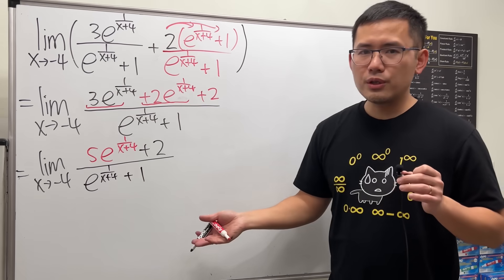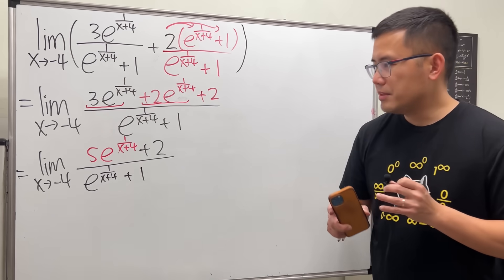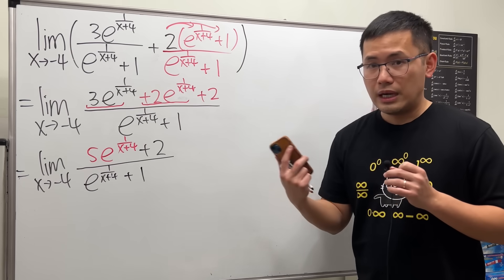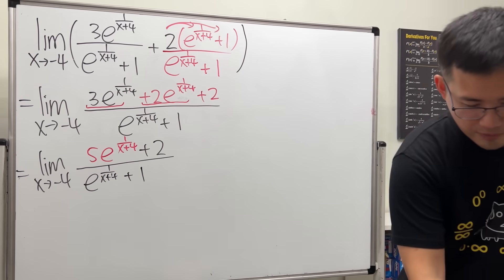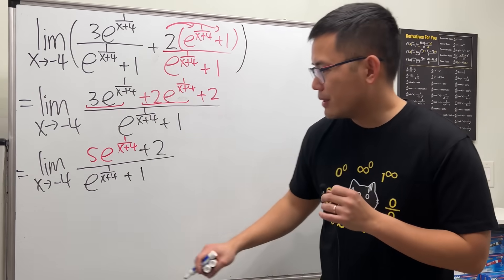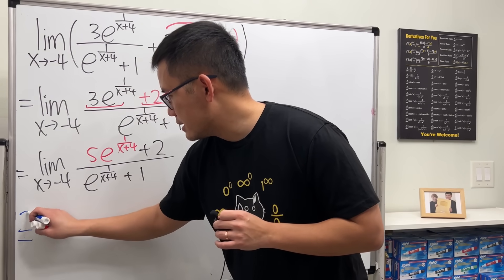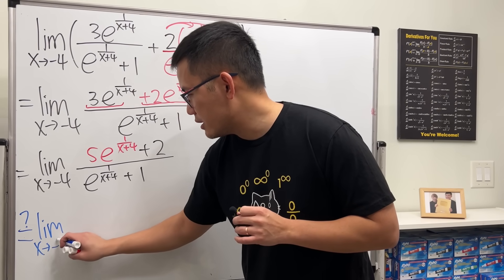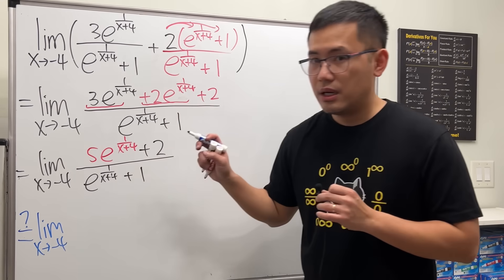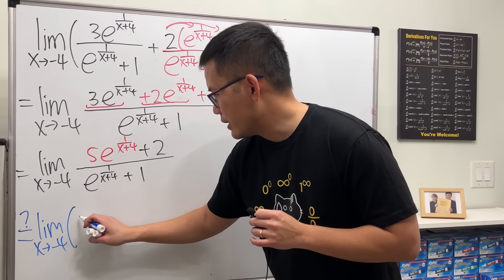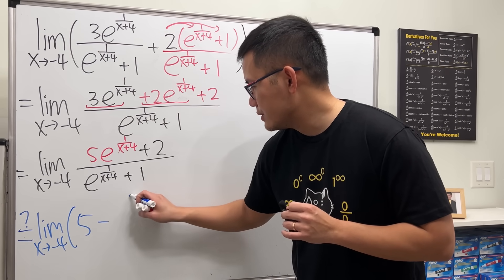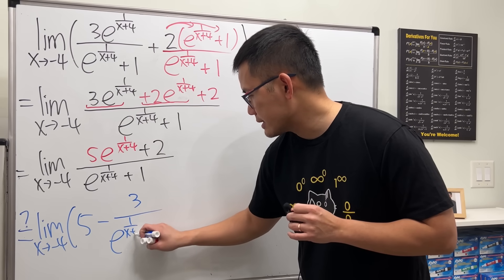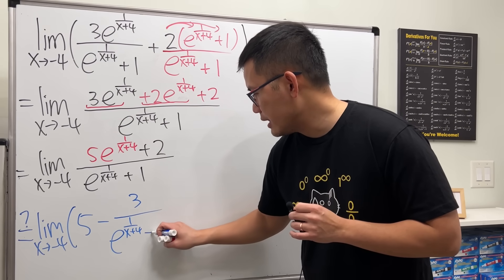So far so good. The next step is the one that might give you some trouble — how do we get from this to the limit as x approaching negative four of five minus three over e to the one over x plus four, plus one? That's the main issue, so let me help you with that.